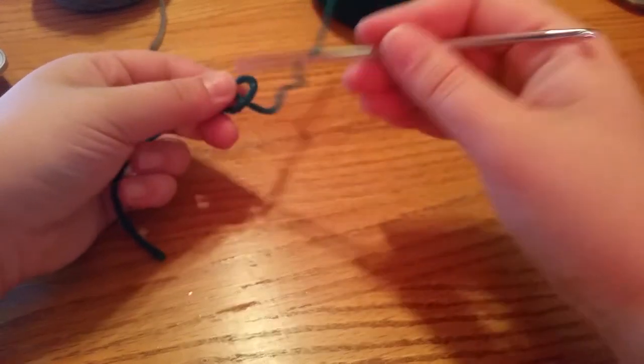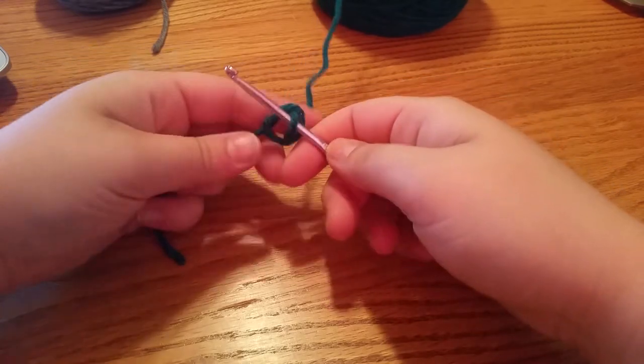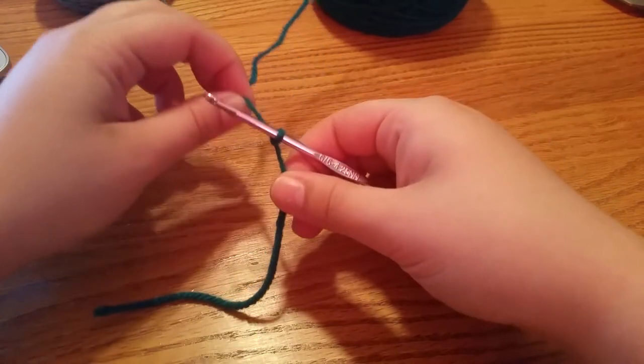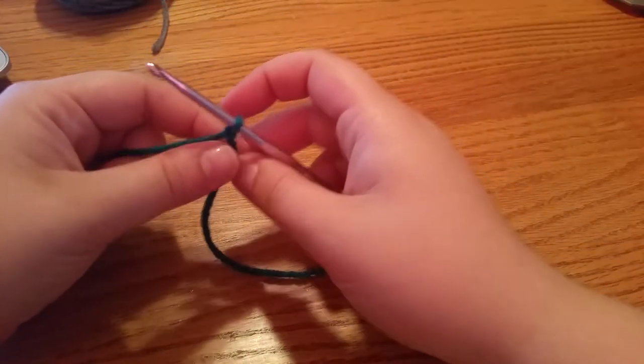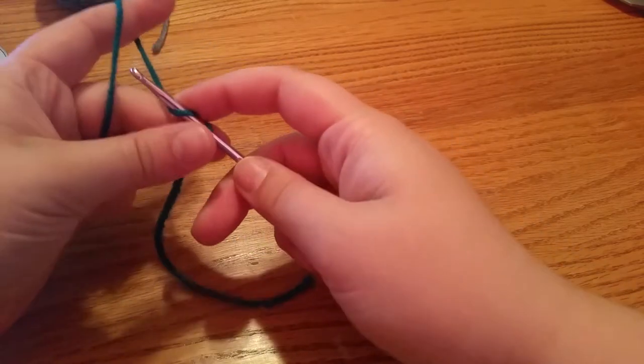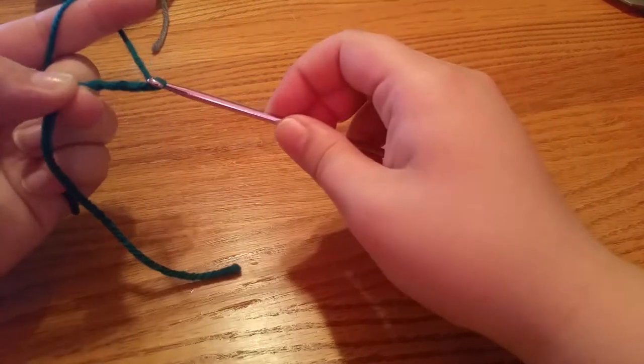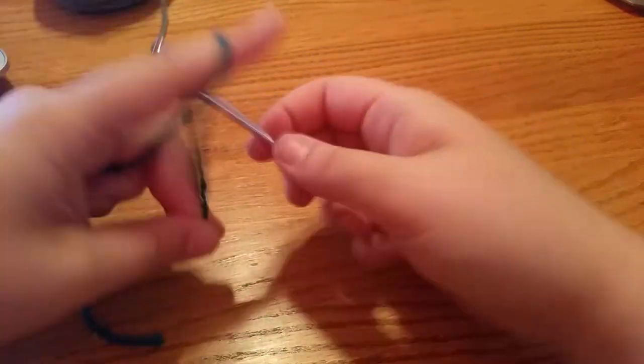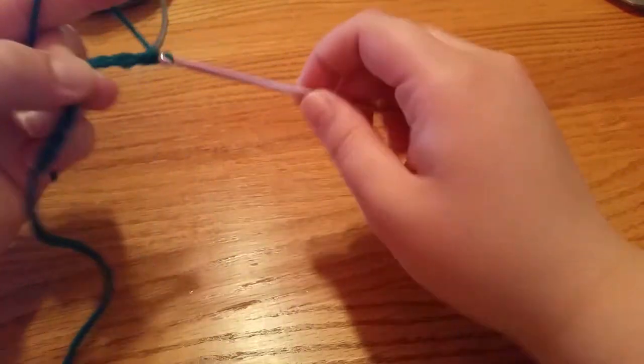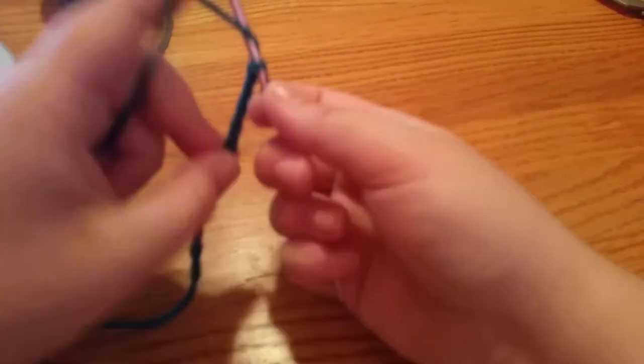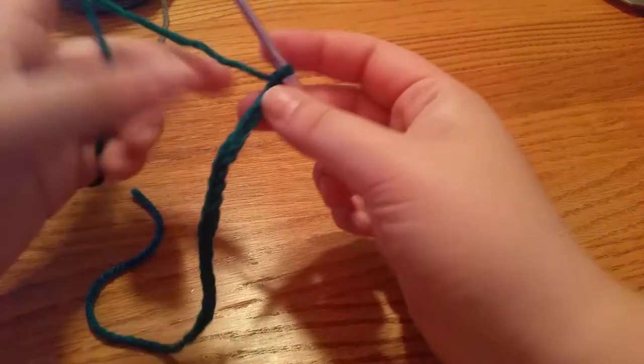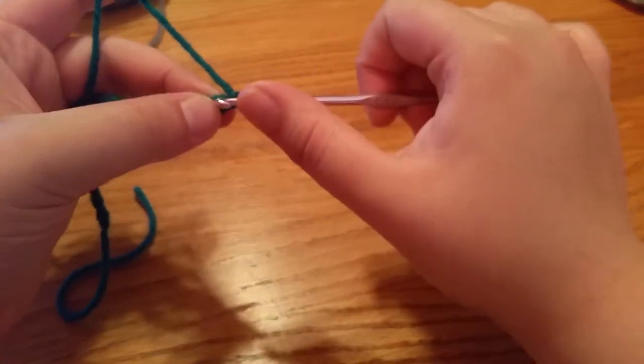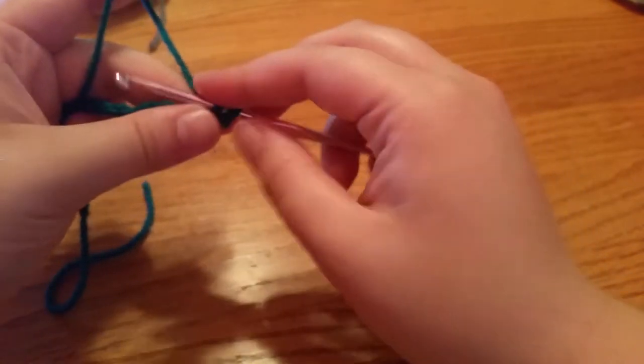So we're gonna start with a slipknot. So we're going to chain 20 and you want to make sure it's as straight as possible. So now we're gonna single crochet in the second chain from the hook.